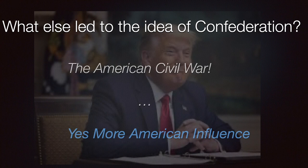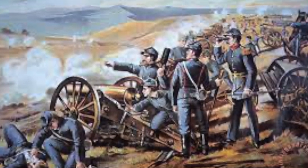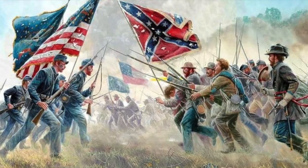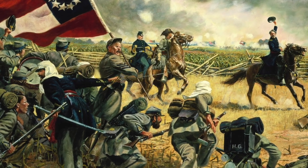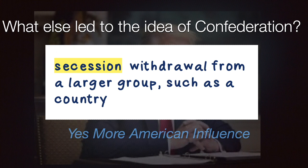It was also the American Civil War that influenced confederation. From 1861 to 1865, the United States was engaged in a civil war — a war of secession, meaning withdrawal from a larger group such as a country. A number of southern states wanted to break away from the rest of the United States. The main reason for this separatist movement was a disagreement about slavery. Most northern states had abolished slavery, but southern states relied heavily on enslaved labor for their economic growth. The southern states tried to form a separate nation where slavery would be legal. During the Civil War, Britain declared itself neutral.